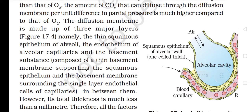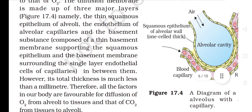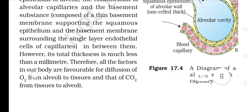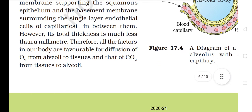The diffusion membrane is made up of three major layers: the thin squamous epithelium of alveoli, the endothelium of alveolar capillaries, and the basement substance composed of a thin basement membrane supporting the squamous epithelium and the basement membrane surrounding the single layer endothelial cells of capillaries in between them. However, its total thickness is much less than a millimeter. Therefore, all the factors in our body are favorable for diffusion of O2 from alveoli to tissues and that of CO2 from tissues to alveoli.